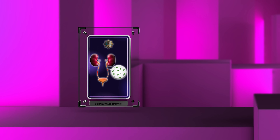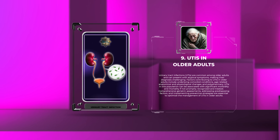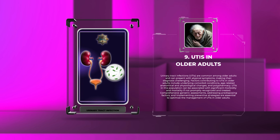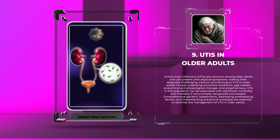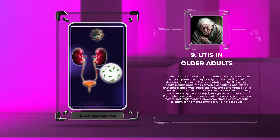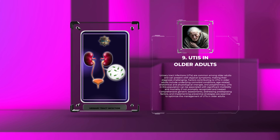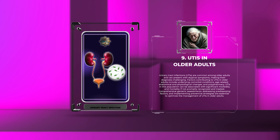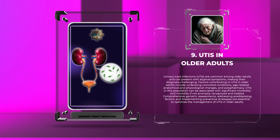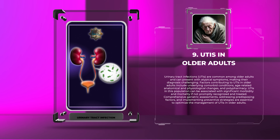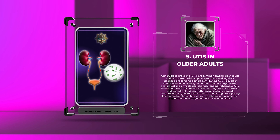Urinary tract infections are common among older adults and can present with atypical symptoms, making their diagnosis challenging. Factors contributing to UTIs in older adults include underlying comorbid conditions, age-related anatomical and physiological changes, and polypharmacy. UTIs in this population can be associated with significant morbidity and mortality if not promptly recognized and treated. Comprehensive geriatric assessments, addressing predisposing factors, and implementing preventive strategies are essential to optimize the management of UTIs in older adults.